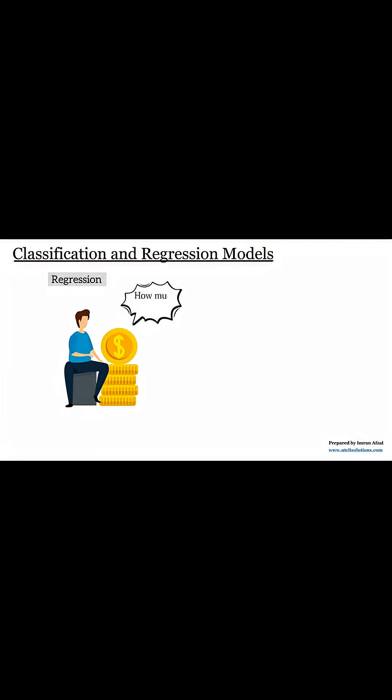For example, if we want to know how much money a person will earn next month, we use regression. The computer looks at old records. It sees age, job, hours worked, and last month's pay. It learns how these things are connected.